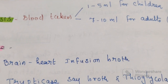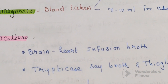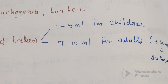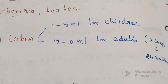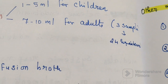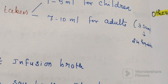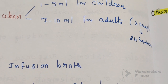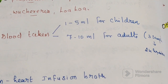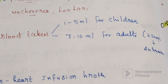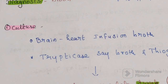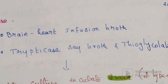For laboratory diagnosis of bloodstream infection, firstly we collect a blood sample. In children, 1 to 5 ml is taken; in adults, 7 to 10 ml. For adults, 3 samples of blood are taken at intervals of 24 hours.